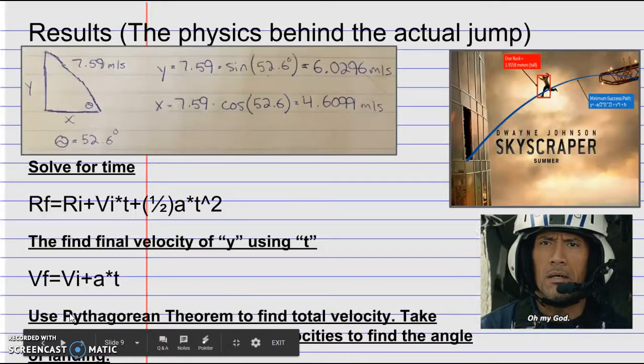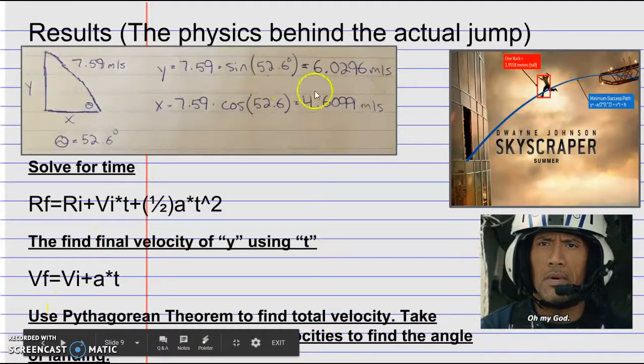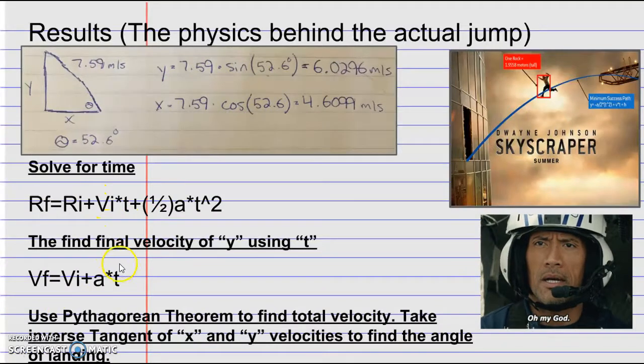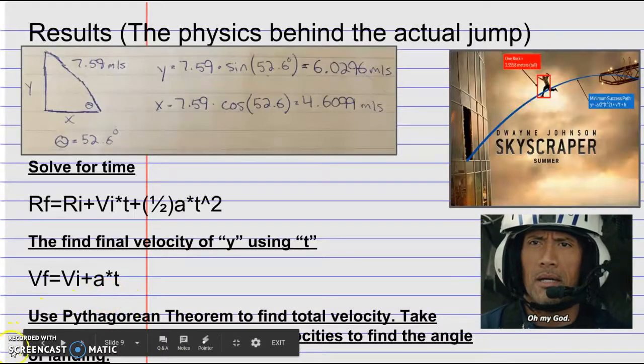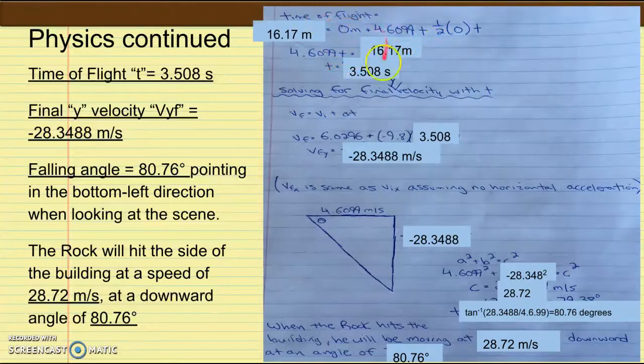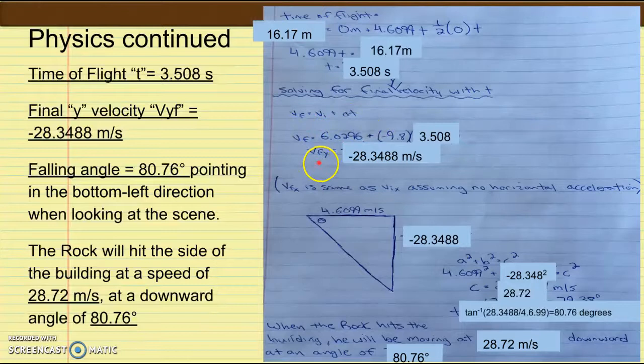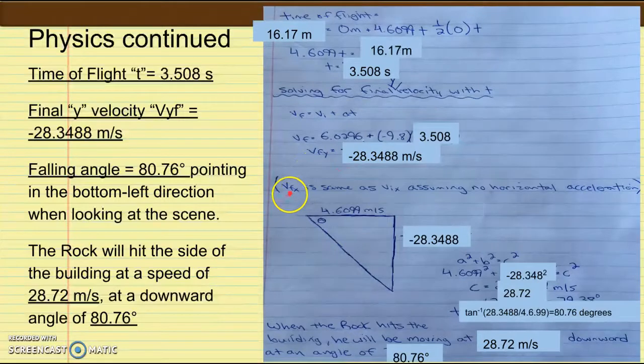Looking at our estimated angle and velocity, we separated the launch velocity into x and y components, and we used the following equations to solve for the final velocity and angle at which he's going to hit the skyscraper. Using kinematics equations taught in class and using the variables that we know the values for, we solve for the time of flight. In doing this, we could then solve for the final y-velocity of The Rock as he hits the skyscraper. Now, assuming that x-final velocity is the same as x-initial velocity, we are assuming that there's no horizontal acceleration after he makes the jump.